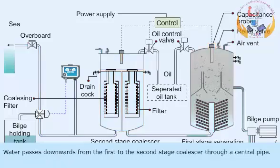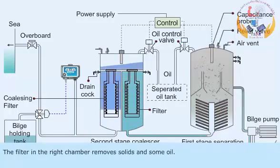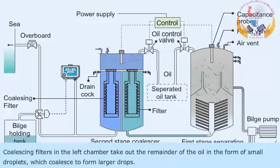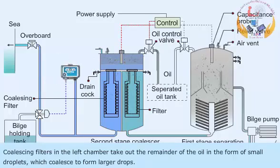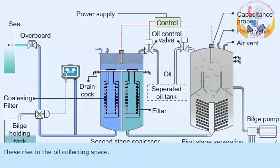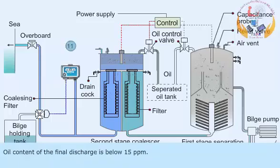Water passes downwards from the first to the second stage coalescer through a central pipe. The filter in the right chamber removes solids and some oil. Coalescing filters in the left chamber take out the remainder of the oil in the form of small droplets, which coalesce to form larger drops. These rise to the oil collecting space.